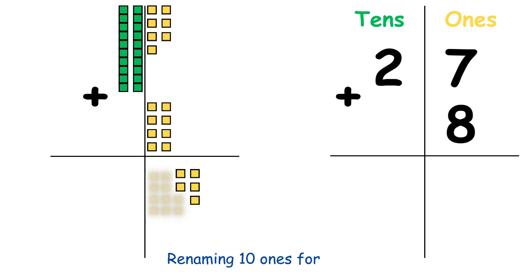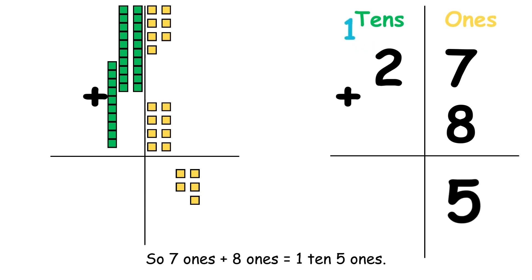Renaming 10 ones for 1 ten. We have 15 ones equal 1 ten, 5 ones. So 7 ones plus 8 ones equal 1 ten, 5 ones.